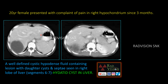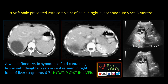Coming to the first case: a 20-year-old female presented with complaints of pain in the right hypochondrium. You can see there is a cystic lesion in the right lobe of the liver with few daughter cysts in segments 6 and 7 of the liver. This is a typical hydatid cyst in the liver. Here is another case showing a typical hydatid cyst with multiple daughter cysts noted in the liver on ultrasound. This is the typical appearance of hydatid cysts in the liver on ultrasound.